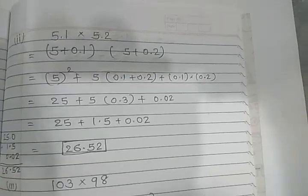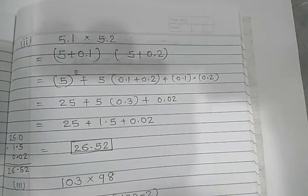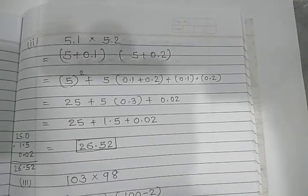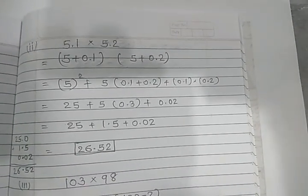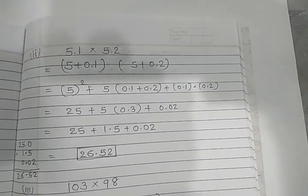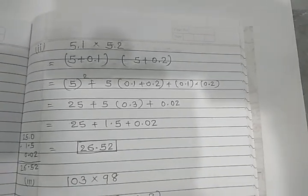Second also very interesting: 5.1, 5.2. 5 plus 0.1, 5 plus 0.2. Yani x plus a, x plus b. x yahan 5 hai, so 5 square, so 5 square plus x yani 5 into bracket a plus b means 0.1, 0.2. a and b hai, a into b. So like this way you can do.